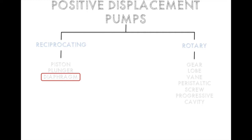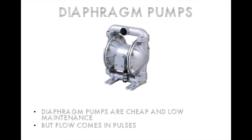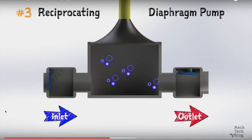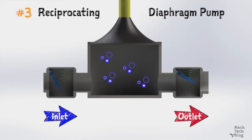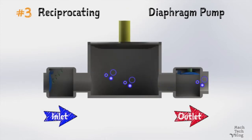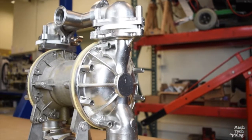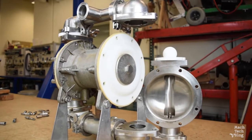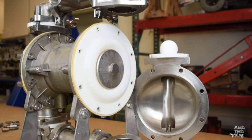Next we're talking about a very simple pump called a diaphragm pump, which is an example of a PD pump. Diaphragm pumps are cheap and low maintenance, but the flow comes in pulses. An elastomer diaphragm is flexible; when it flexes, it changes the volume of the chamber, causing fluid to be drawn in or pushed out. A common example is an air-powered double diaphragm pump — essentially two diaphragm pumps back-to-back with diaphragms linked by a connecting rod, so it pumps on both strokes. One unique property is that it doesn't require a seal, because the wet and dry sections are completely separated by the diaphragm.